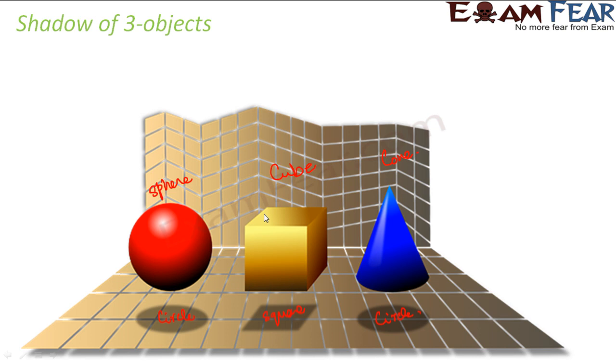Similarly, in this case, this particular face of the cube, if light is coming from top, this particular face doesn't allow light to pass through. As a result, you get it in the shape of a square. And the same is true for the cone as well.